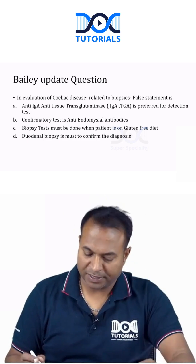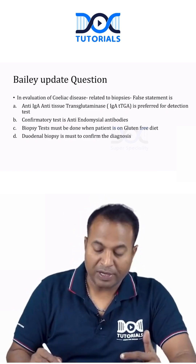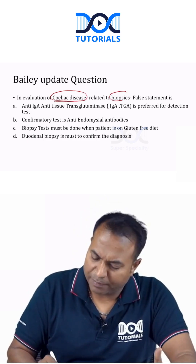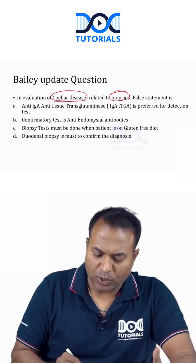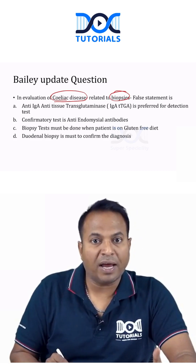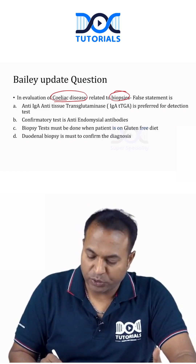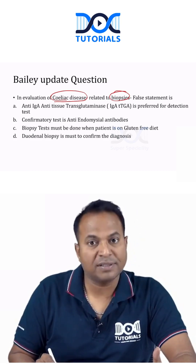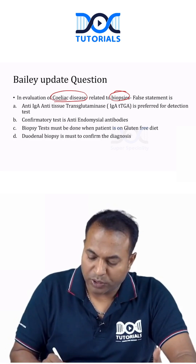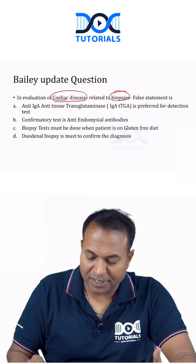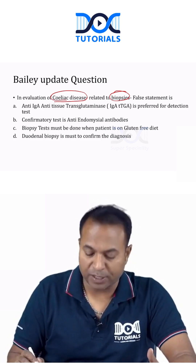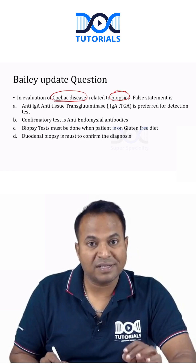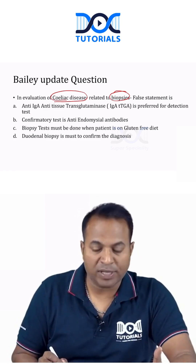Celiac disease is confirmed by taking a biopsy. Anti-IgA anti-tissue transglutaminase is used for detection — that is true. The confirmatory test is anti-endomyseal antibodies.